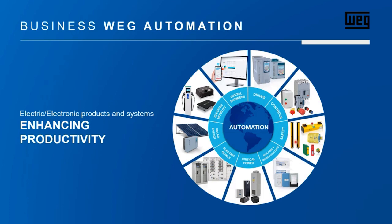These are the main product lines produced inside VEG automation division: drives, which means medium voltage and low voltage variable speed drives and soft starters; digital businesses, which brings connectivity and software solutions for the 4.0 industry; electronic mobility; solar applications; electrical panels, which are low voltage and medium voltage switchboards; critical powers such as industrial rectifiers and UPSs; building and wiring infrastructures; and safety devices such as sensors, relays, contactors for safety applications and controls, which means molded case circuit breakers, contactors, push buttons and so on.